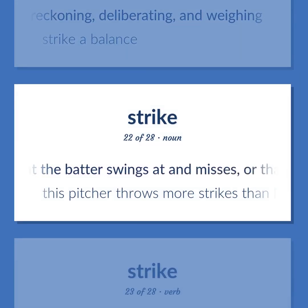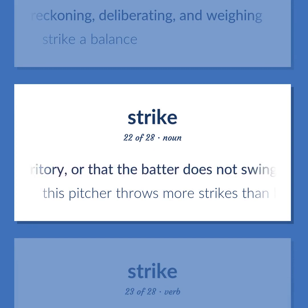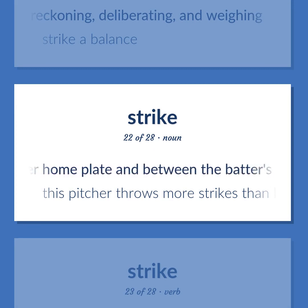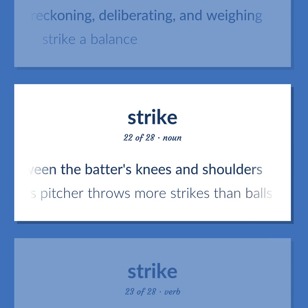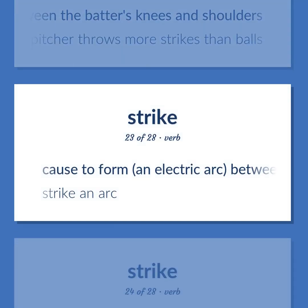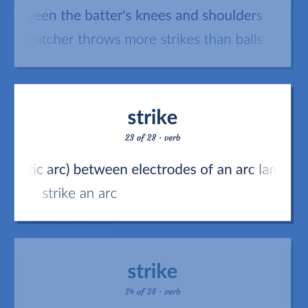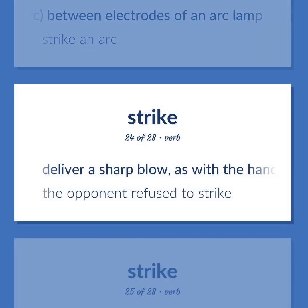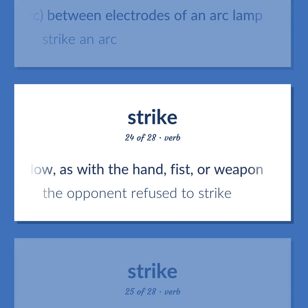Baseball: A pitch that the batter swings at and misses, or that the batter hits into foul territory, or that the batter does not swing at but the umpire judges to be in the area over home plate and between the batter's knees and shoulders. This pitcher throws more strikes than balls. Cause to form an electric arc between electrodes of an arc lamp — strike an arc. Deliver a sharp blow, as with the hand, fist, or weapon. The opponent refused to strike.